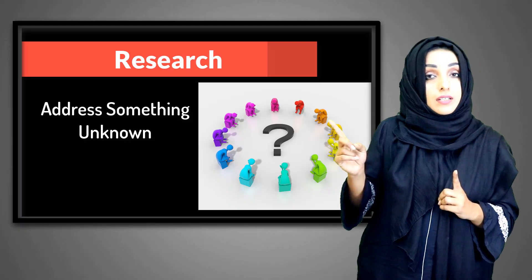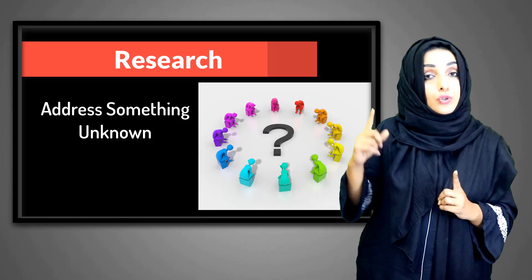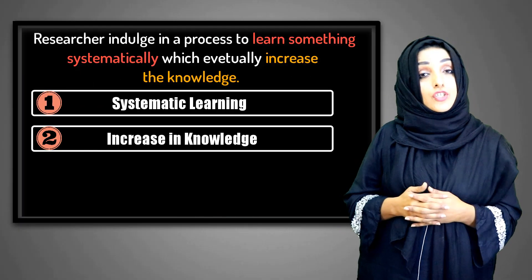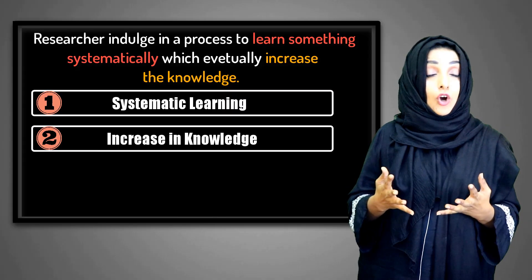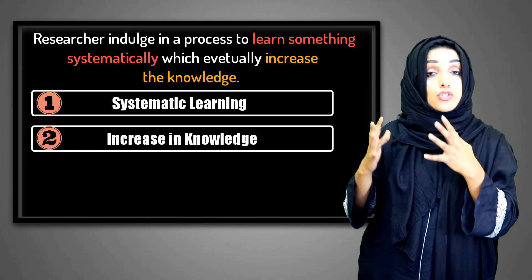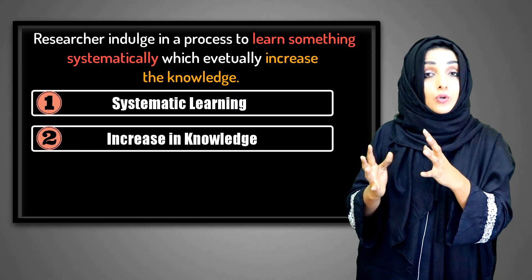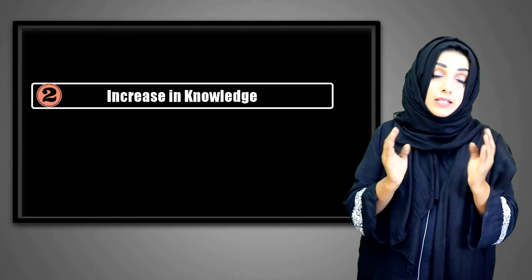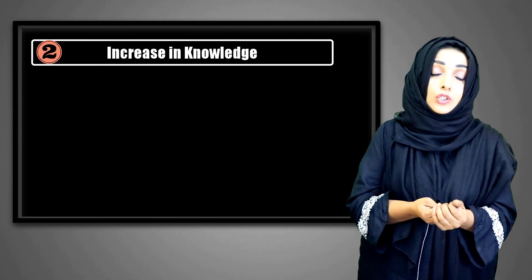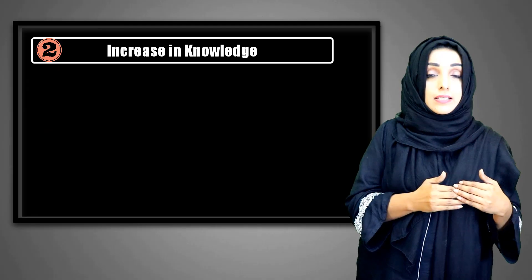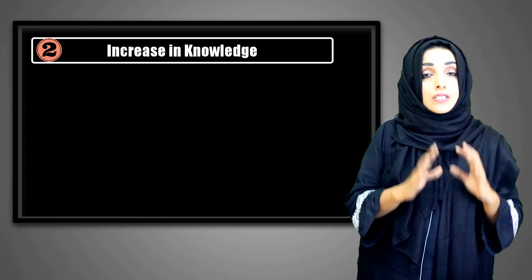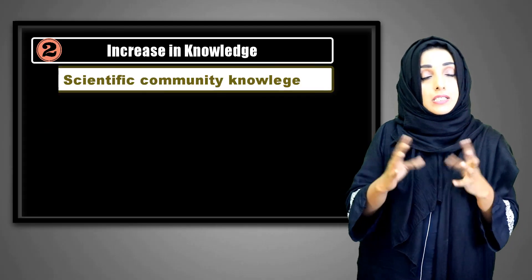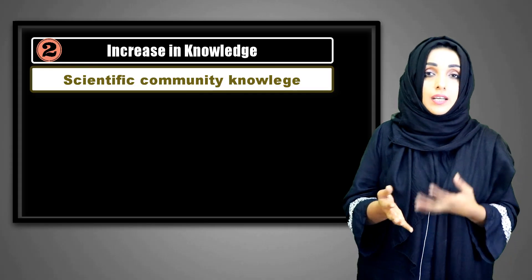Research is to address something unknown — ek aisi cheez ko address karna hai jis ko pehle address nahi kiya gaya, ek aise question ka answer find out karna hai jis ka pehle answer kisi ko nahi pata, nobody knows the answer to what you are addressing through your research. The second point in this definition is to increase the knowledge — means jo results, jo data aap ne collect kiya, after doing the analysis, woh results us specific topic ke baare mein scientific community ka knowledge increase karte hain.